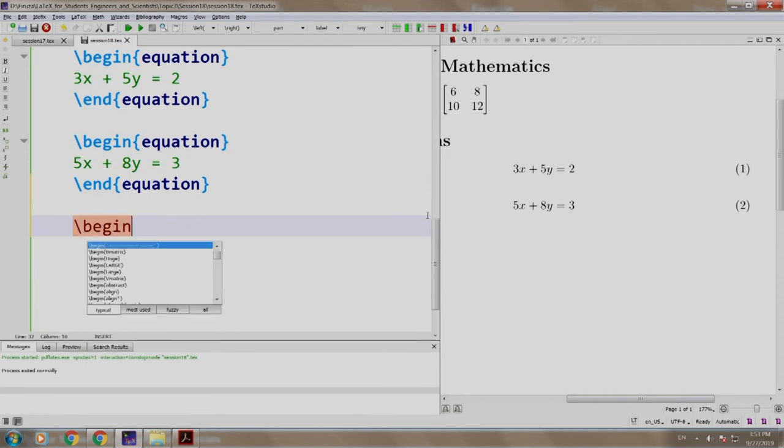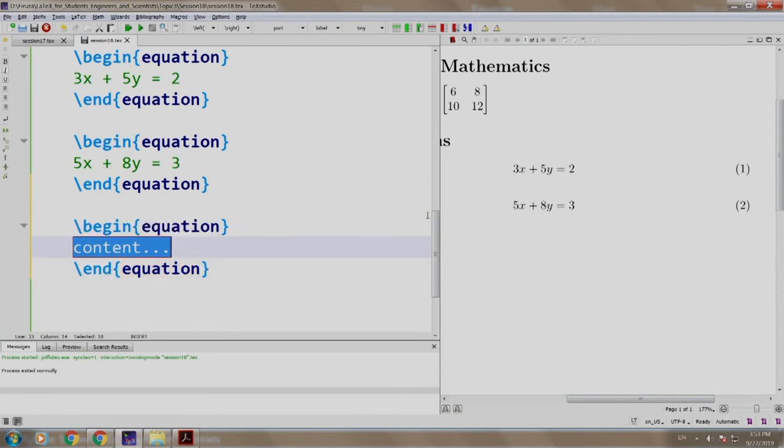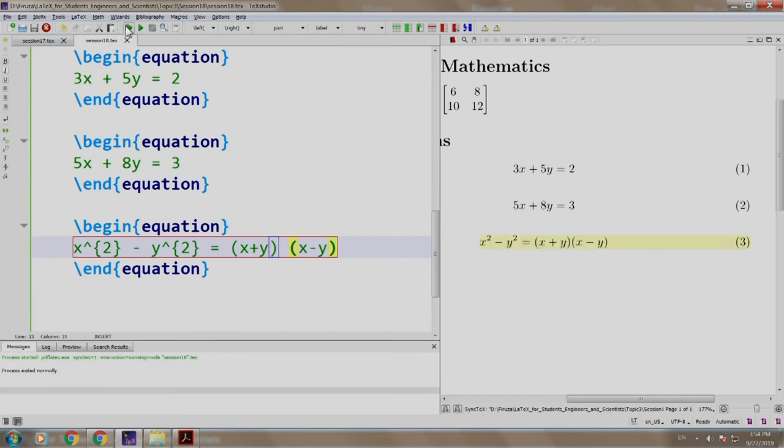We say slash begin equation and we say x square minus y square equal to x plus y into x minus y. Let us build and run. We have another equation number 3.